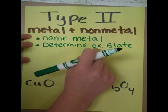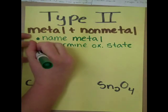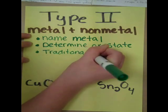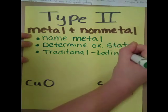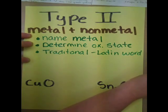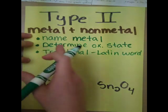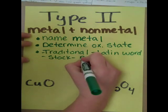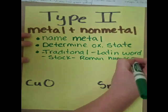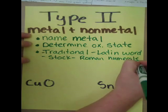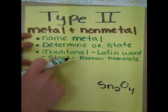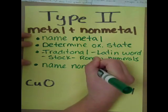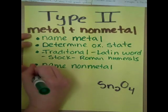Once we determine the oxidation state, we then have to label it. We can either do this using the traditional system, which uses Latin words, or we can put Roman numerals between the metal and the non-metal — that's the stock system. After we label our oxidation state, we name our non-metal and, like before, add our -IDE ending.